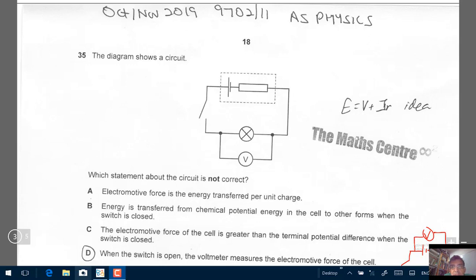The questions appeared on the AS Physics exam, subject code 9702, paper 11 in the October-November 2019 session.